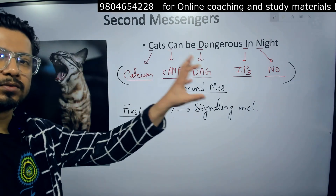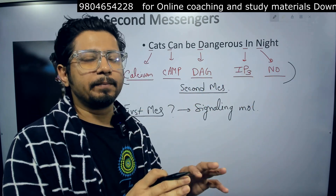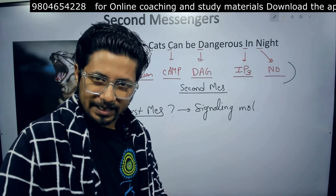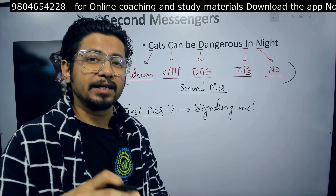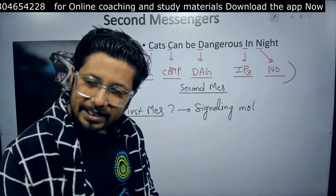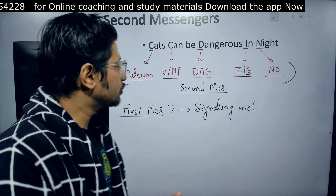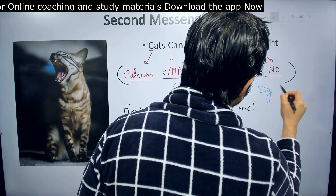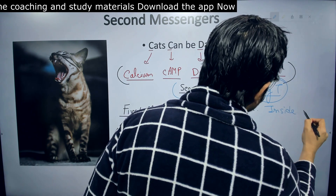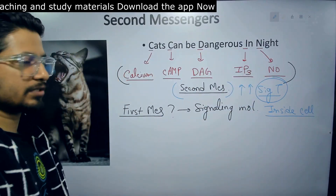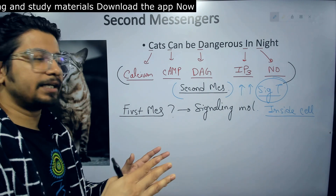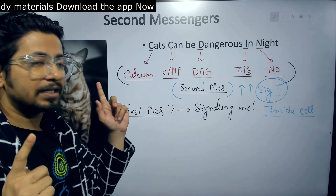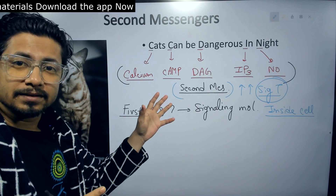When the signaling molecule binds to the receptor on the surface of the cell, that receptor gets altered on the cytosolic side of the cell. That triggers the activation of further proteins in the cytosol, or proteins semi-embedded to the inner leaflet of the cell membrane. Then it triggers the activation of proteins inside the cell. Second messengers initiate a signal transduction inside the cell.